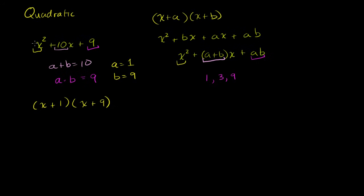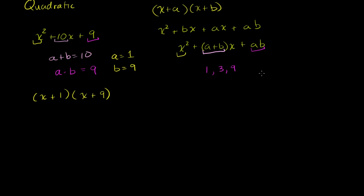When the leading coefficient on the quadratic is 1, you can just ask: what two numbers add up to the coefficient on the x term, and when you take their product, equal the constant term? The expression should be in standard form so you can always say: whatever's the first degree coefficient, a and b must add to that; whatever's the constant term, a times b must equal that. Let's do several more examples.